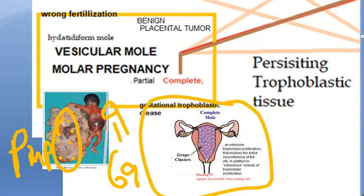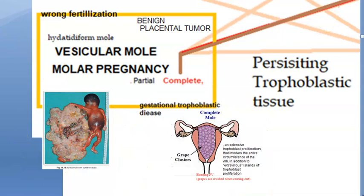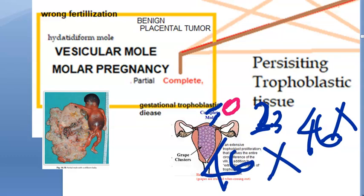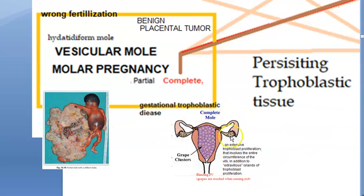In a complete mole, the ovum is empty — it has no chromosomes at all. One sperm fertilizes it, giving 23 chromosomes, which then duplicates to 46, trying to form a fetus from paternal chromosomes only. Alternatively, two sperms can fertilize the empty ovum, also giving 46 paternal chromosomes. In either case, the fetus will not survive — this is androgenesis. This is the classic complete mole.